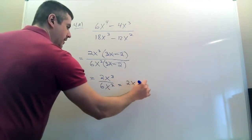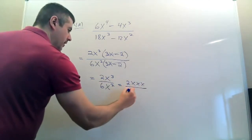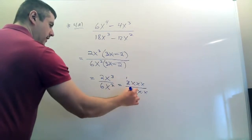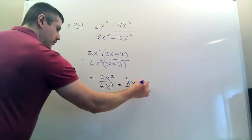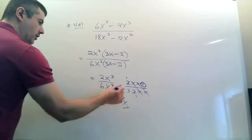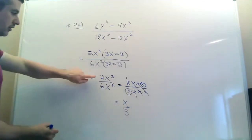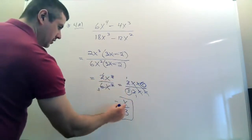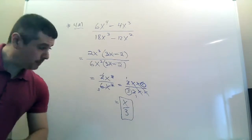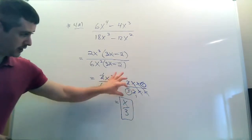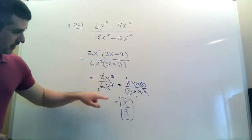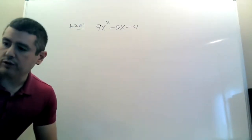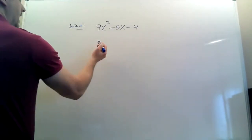You crossed out the common factor and got here, but this isn't finished — you can still reduce these numbers. Six is 3 times 2; x³ and x² — cross out the 2's, cross out those x's, cross out those x's. You're left with one x upstairs and 3 downstairs. Two goes into 6, and x² goes into x³, so after crossing out you reduce a lot. That's 4a done.